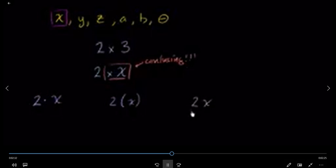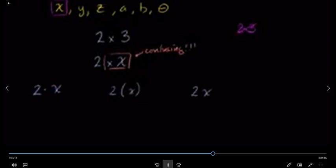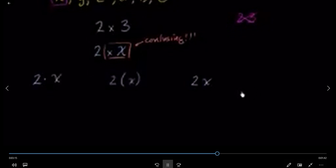You can't understand everything on your own, but you can't explain it either. If you have to write the count, then you have to write 2x. If you want to write 2x, the count is 2x. If you need to write 2x, then you write 2x, then it will be 3x. You can write 2x on the front. If you have 3x, you can write 3x.